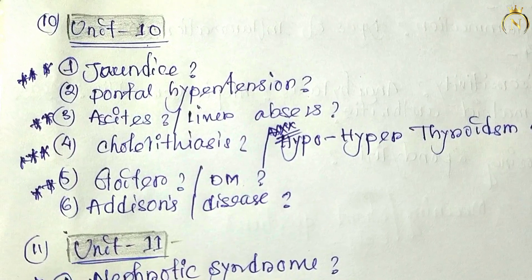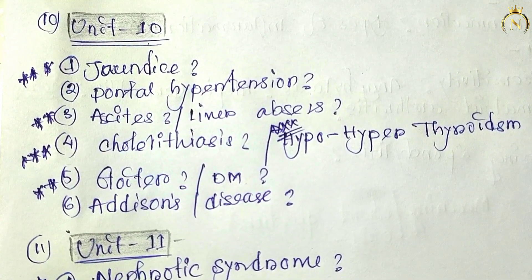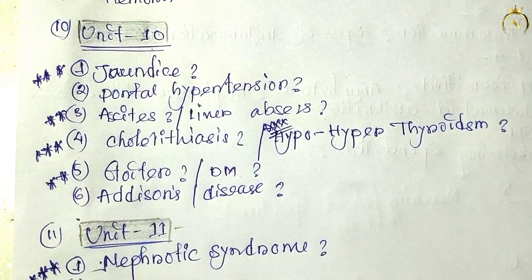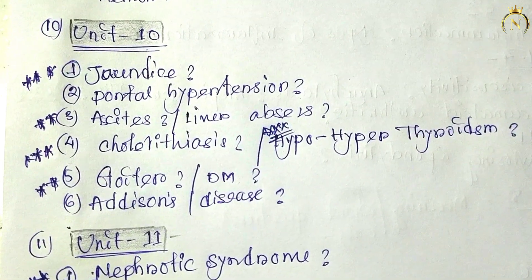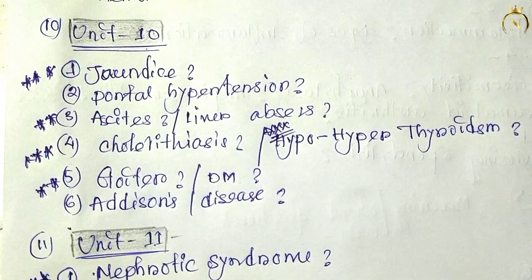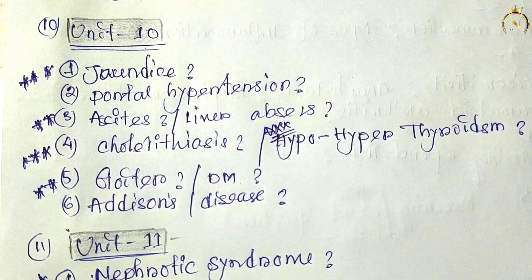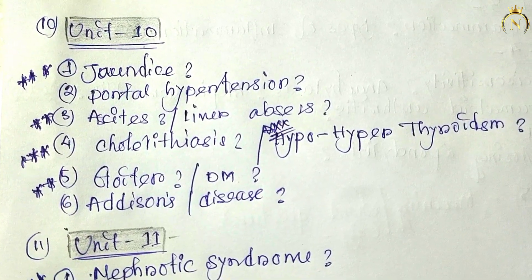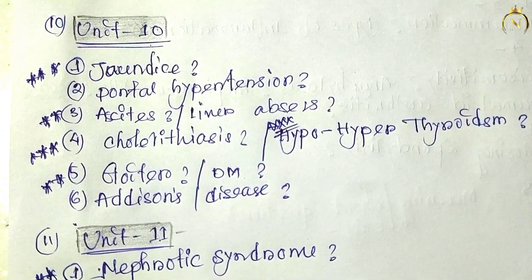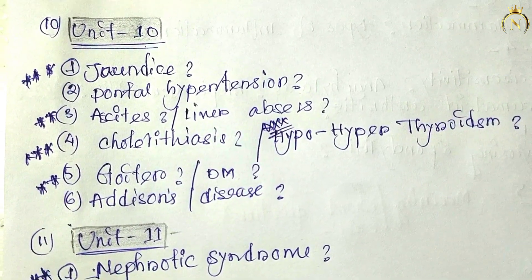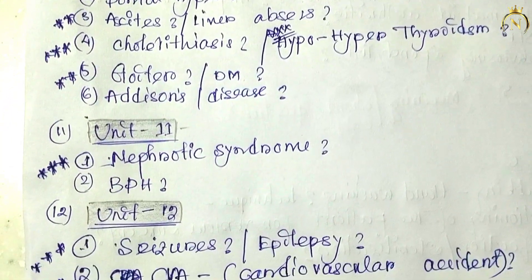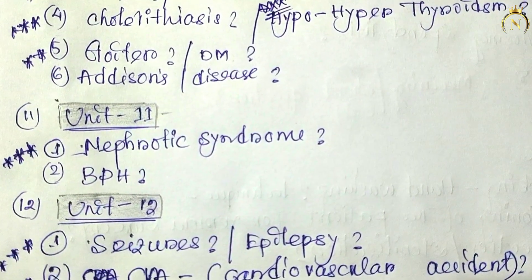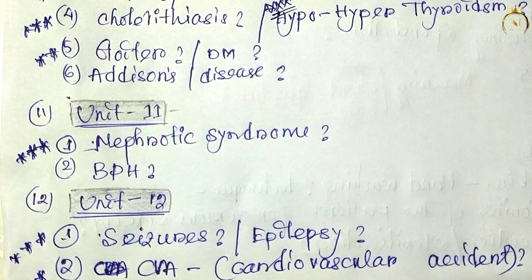For unit nine, GERD — gastroesophageal reflux disease — is most important, and hemorrhoids are also questions you can prepare. Unit ten joint diseases are most important; sometimes they come for four marks as well. Liver abscess, hypothyroidism, goiter, Addison's disease, and diabetes mellitus are also important in unit ten.